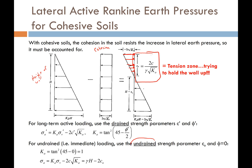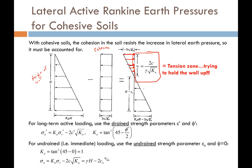If we want to assume the soil behaves in an undrained manner, we assume the friction angle is zero and that all shear strength comes from the undrained shear strength. Plugging in zero for phi makes the active earth pressure coefficient equal to one, which simplifies the equation substantially. The real behavior of clay backfill will be something between drained and undrained, so most engineers consider both cases to make sure the wall performs okay for both.